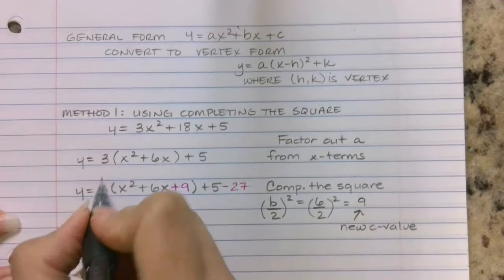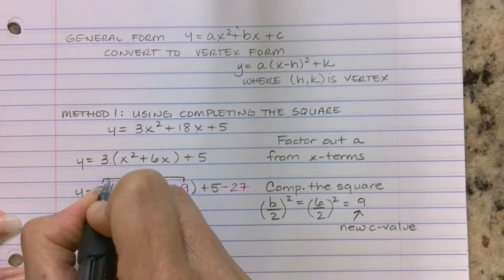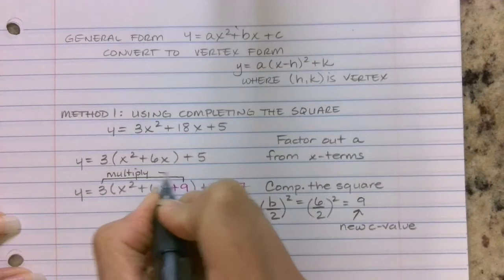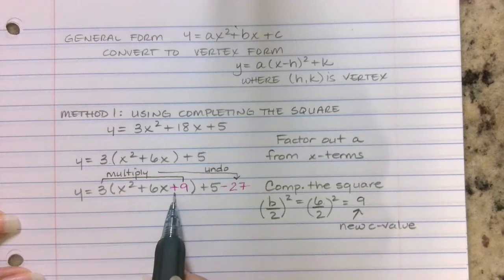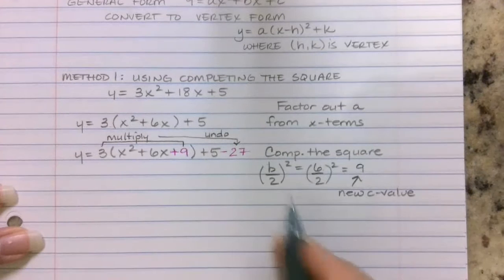And so what I'm trying to make sure you see is that any time you guys insert a brand new constant, if you have a coefficient other than 1 on the outside of that parentheses, make sure that you multiply by that coefficient, and then whatever number you put in there, make sure you are undoing it.